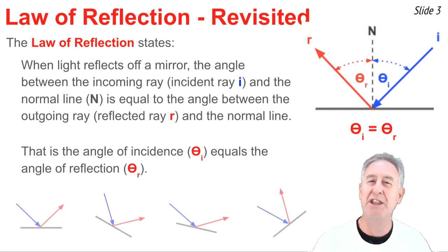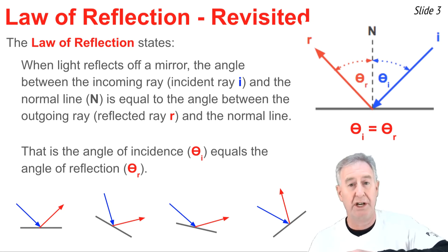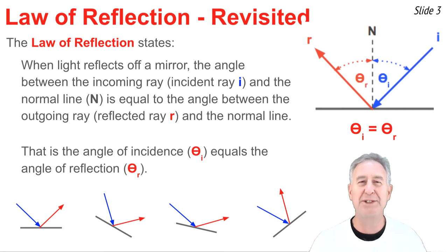What we know is that when light reflects, these two angles are equal, and it doesn't matter how the surface is oriented, whether it's perfectly horizontal, vertical, or at some angle to the axes. The angle of incidence is always equal to the angle of reflection.